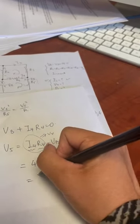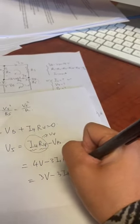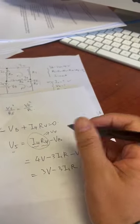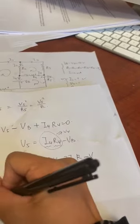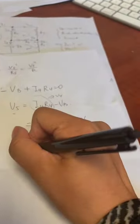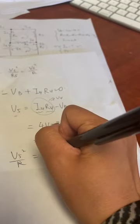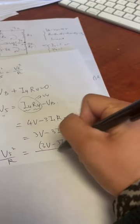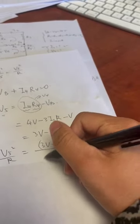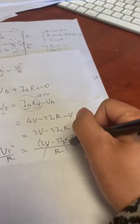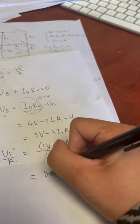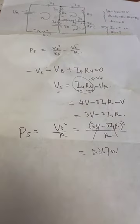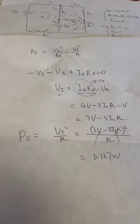So our final result is 3V minus 3I1R. So that is the voltage drop across 5. You could plug that in to your power. And that would be 3V minus 3I1R squared over R. Plug in your values for V and I1 and resistance. And for my values, I get 0.367 watts. So that is the solution to the last part.